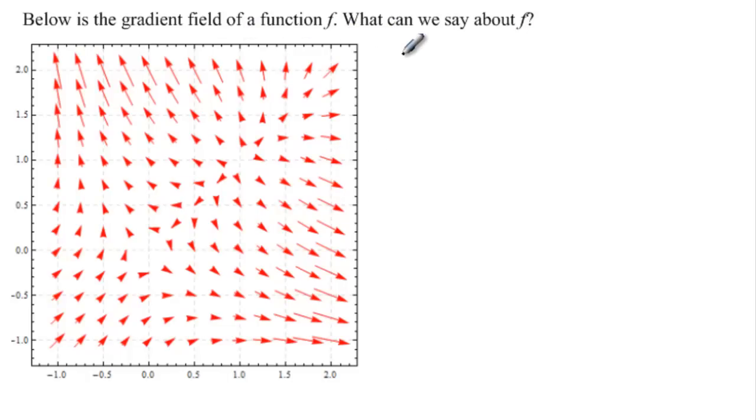First of all, we can say the same thing we've said twice before, that f is a function from R² to R. Remember, R is always the case because f is always a scalar function, and R² because this has two dimensions, because the vectors are two-dimensional.